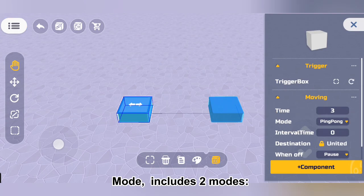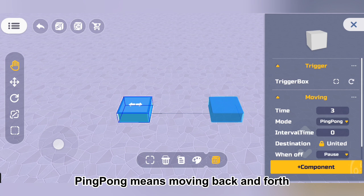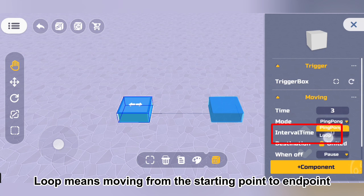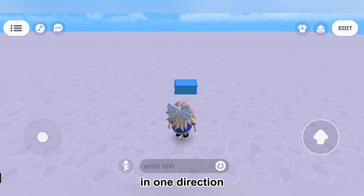Mode includes two modes. Ping-pong means moving back and forth between the starting point and endpoint. Loop means moving from the starting point to endpoint in one direction.